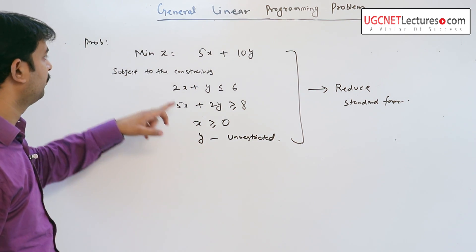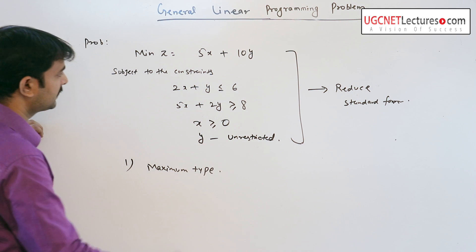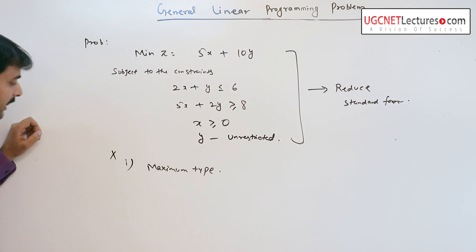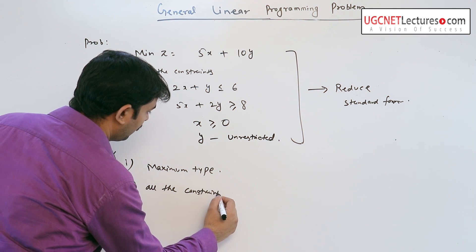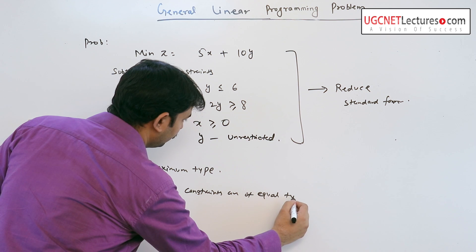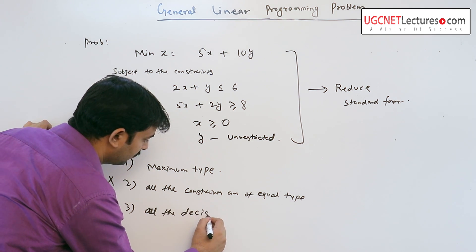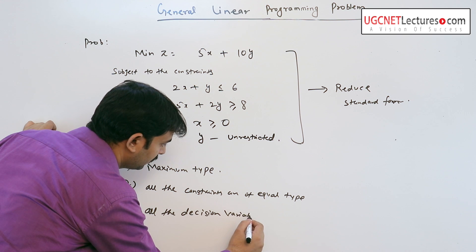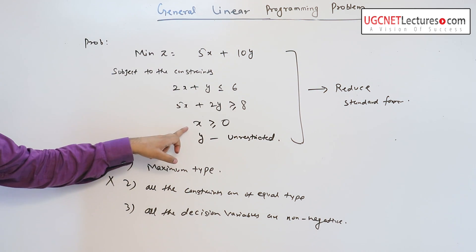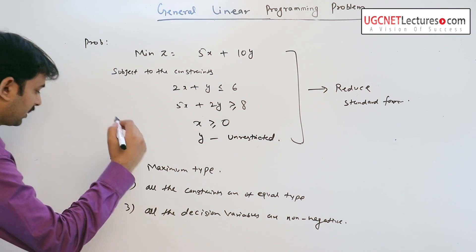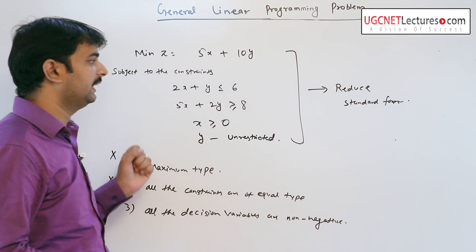Here, checking the criteria of standard form: the first criteria — objective function is of maximization type — is not satisfied. The second criteria — all constraints are of equality type — is also not satisfied. The third criteria — all decision variables are non-negative — is also not satisfied, because x is non-negative but y is unrestricted.